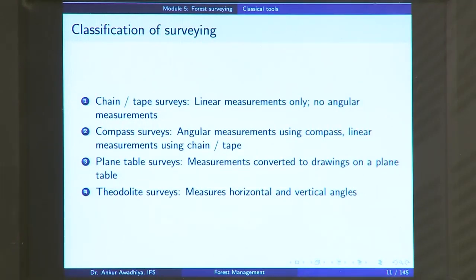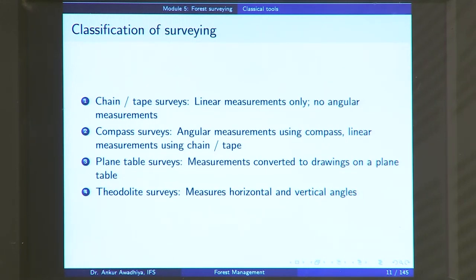Apart from classical techniques, modern tools include GPS, which directly gives the location of points using satellite positions; total station surveys, which use an electronic instrument integrating different measurements; drone surveys, where a drone flies and records positions and angles; and LiDAR or radar. These classical tools, however, have been used since ages.